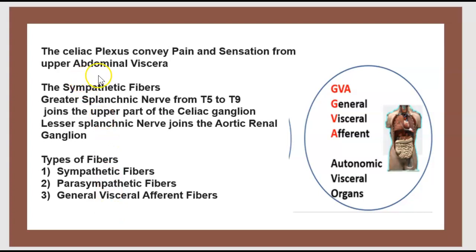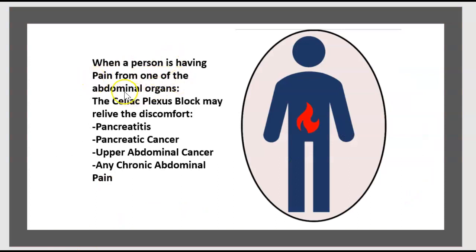The celiac plexus conveys pain and sensation from the upper abdominal viscera. The sympathetic fiber — the greater splanchnic nerve from T5 to T9 — joins the upper part of the celiac ganglion, while the lesser splanchnic nerve joins the aorto-renal ganglion. The types of fibers include sympathetic, parasympathetic, and general visceral afferent. When a person is experiencing pain from an abdominal organ, a celiac plexus block may relieve the discomfort. Indications include pancreatitis, cancer, upper abdominal cancer, and any chronic abdominal pain.